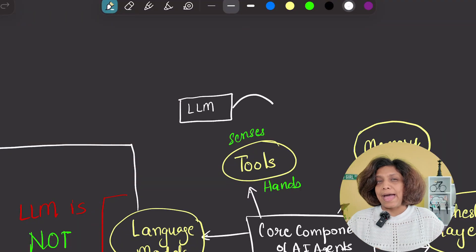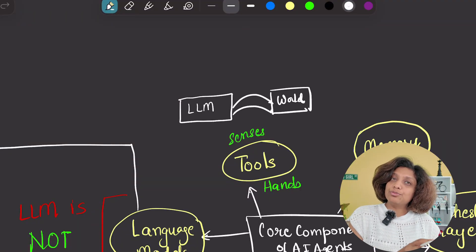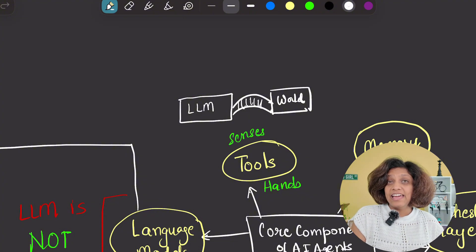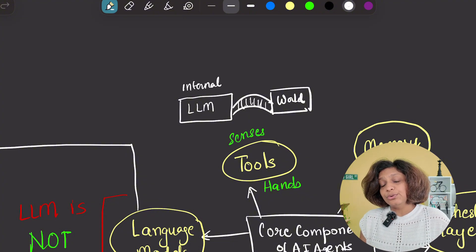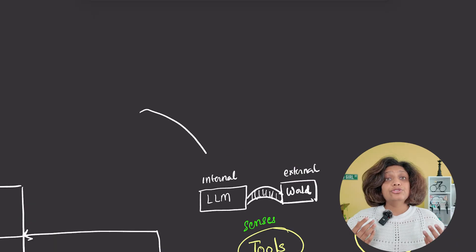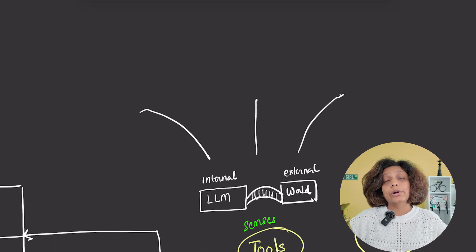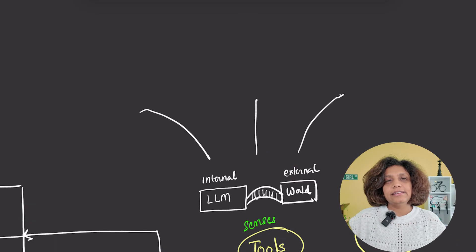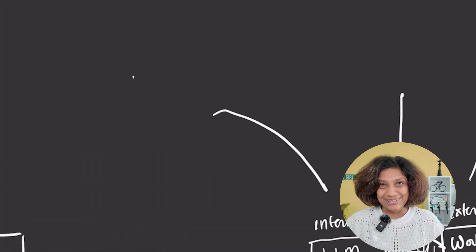The tools. This is where AI agents get their superpowers. Tools bridge the gap between what the language model knows internally and what it can actually do in the external world. There are three main types of tools your agent needs. And understanding these is crucial for builders.